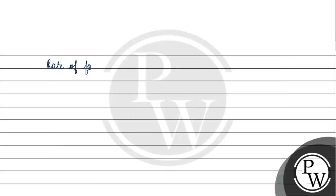The rate of formation of SO₃ equals the change in concentration of SO₃ with respect to time, which is given as 1.6×10⁻³ mol per litre per minute.